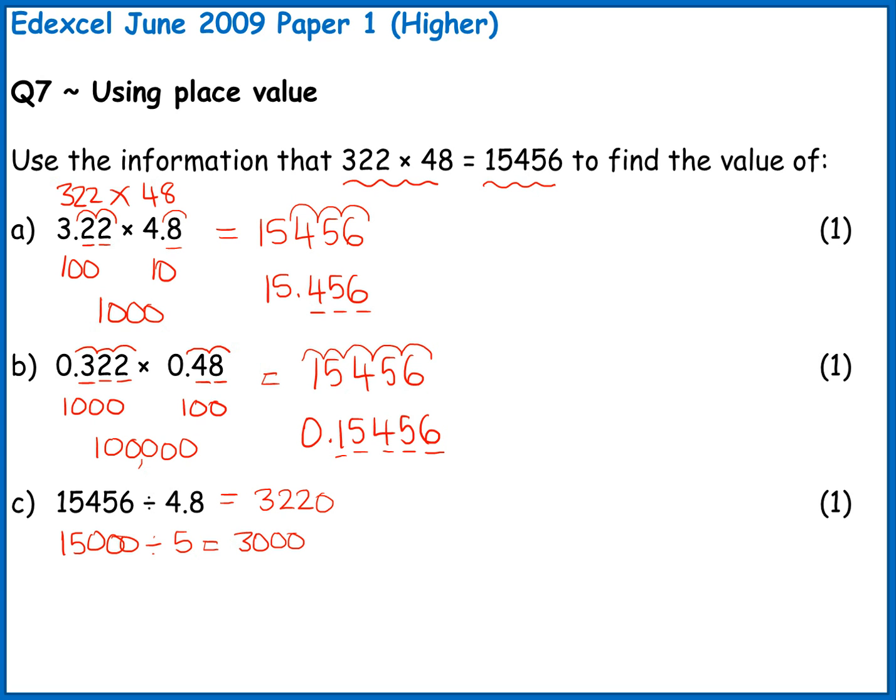And the reason why this works, if you look at our original calculation, which was 15,456 divided by 48, that was 322. Now my original calculation was divided by 48. In my new calculation, I'm dividing by 4.8. So I'm dividing my original number into 10 times fewer parts. So if I've got fewer parts, then the amount that I get is going to be greater. So if I've divided by 10 times fewer parts, I'm going to get 10 times more in my final answer.